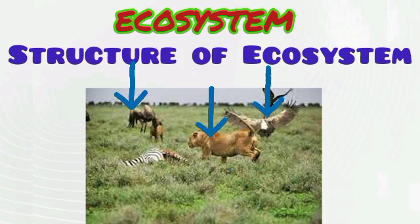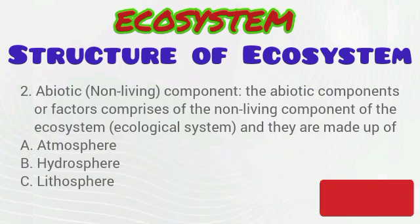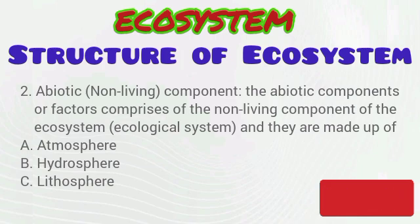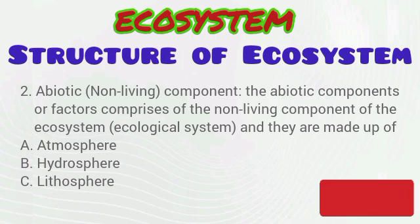The biotic component comprises all the producers, consumers, and decomposers, while the abiotic component comprises all the non-living components of the ecosystem. These include the atmosphere — the air around living organisms — the hydrosphere — the water around living organisms — and the soil around the living organisms.